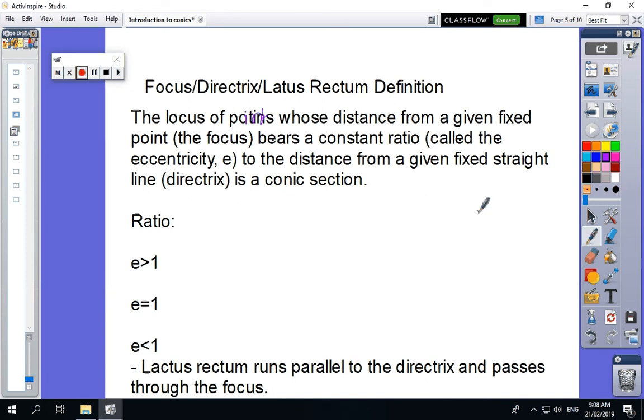There's a constant ratio called the eccentricity, e, to the distance from a given fixed straight line directrix. So we're going to draw it. So here is our curve. Here is our directrix. Here is our focus. And any given, so this is our fixed point. And when we look at any other point, so this is, say, x, y, then the ratio should be the same. And that's what we're looking at.